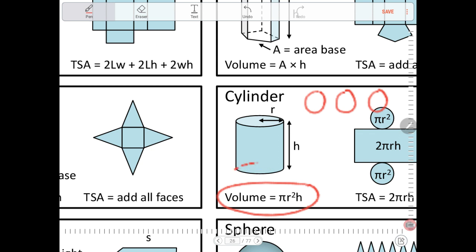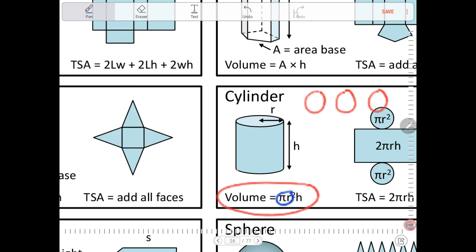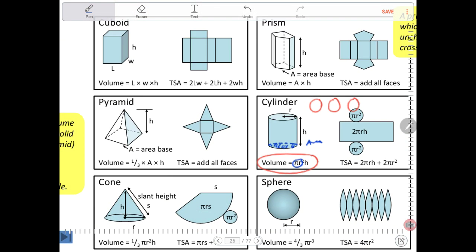So that's technically what we're doing here, this pi r squared bit. The pi r squared, which I'll circle in blue, is finding the area of the base of the cylinder. So if we can find the area of the base and multiply it by the height, we get the volume.